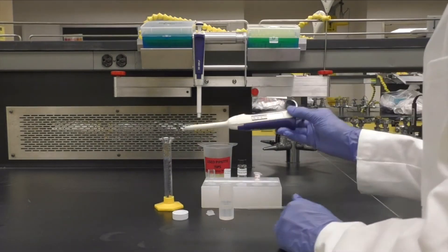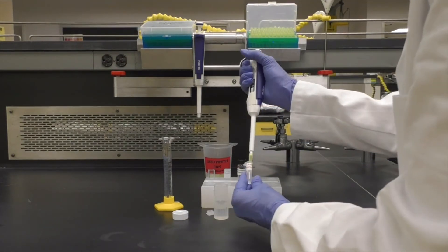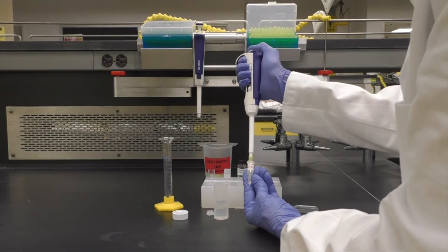Next, make sure your micropipet is set to 100 microliters and pipet that amount of ascorbic acid into the 20-mil vial.